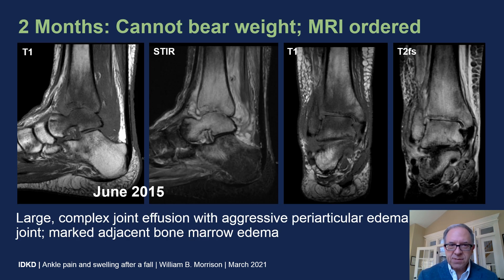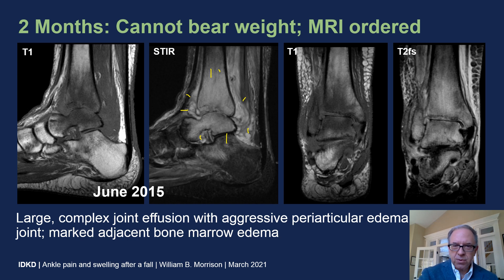Another month passes and she cannot bear weight. An MRI was ordered, and now you can see that there is a large, complex joint effusion. There is diffuse soft tissue edema surrounding the ankle joint, pericapsular edema, and subcutaneous edema. We see tremendous bone marrow edema in the tibia, the talus, and surrounding bones. We also see joint space narrowing and erosions of the central aspect of the joint and at the joint margins.